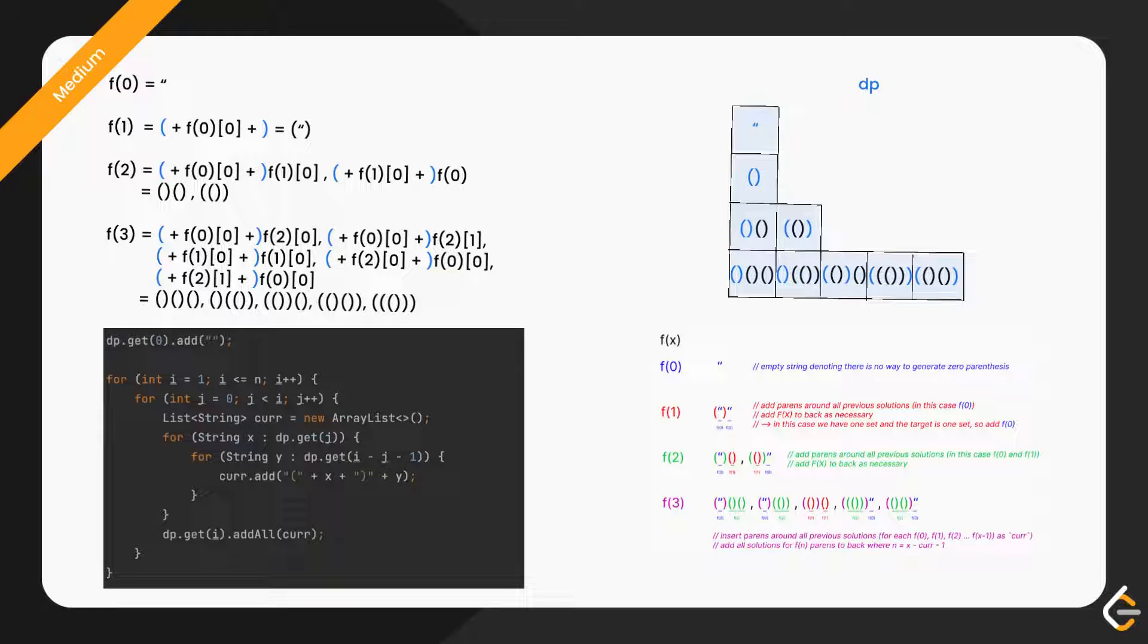for f(n), we will pick f(j) and f(i-j-1) and selectively wrap them between opening and closing parentheses as shown. Hence, we will iterate from i equals 1 to n inclusive.